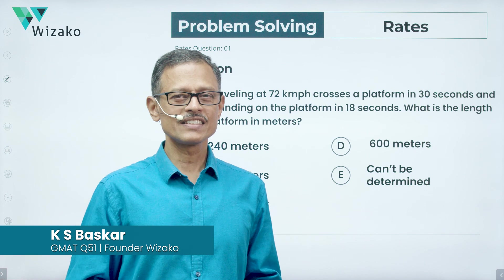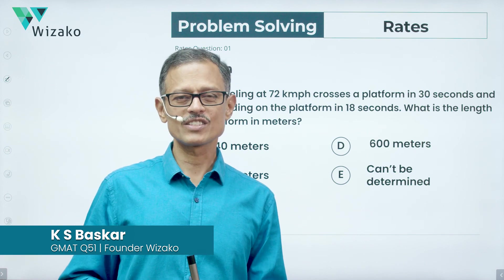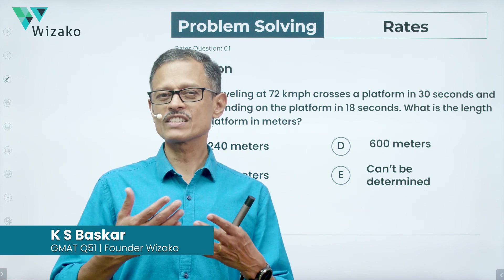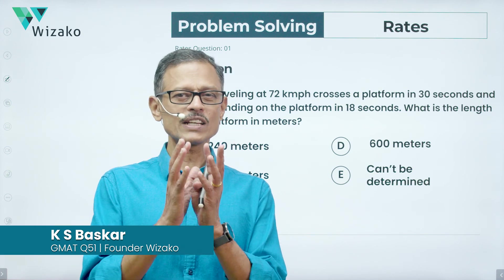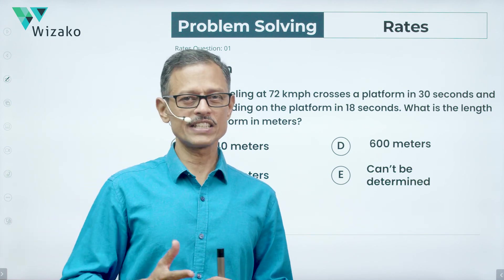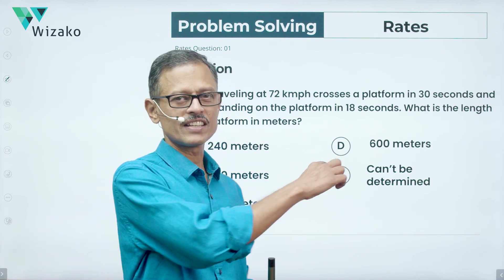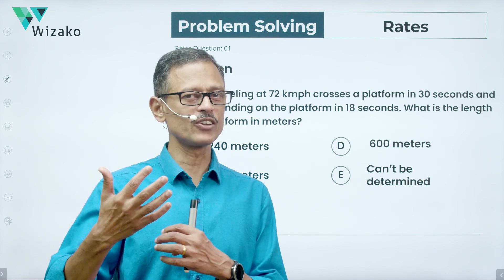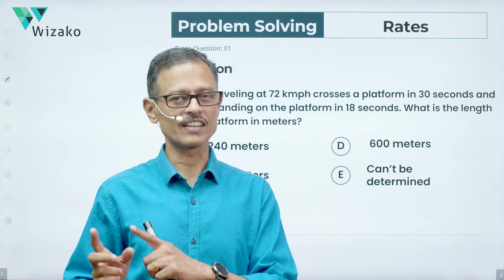Hi everyone. This is a GMAT problem-solving practice question. It's a medium difficulty question from the topic speed, distance, and time, focusing on the concept of a train crossing an object. Let's read the question and then look at what concepts we need to know to solve this question.